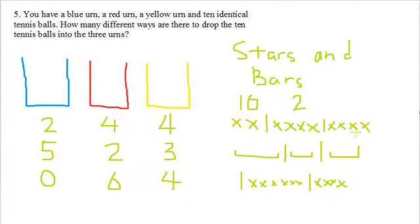So what I hope you see is that every possibility of putting balls in can be drawn as a drawing of ten stars and two bars. And furthermore, any drawing of ten stars and two bars can be converted back into a way of putting balls into the urns. So what this allows us to do is say that to count the solution to this problem, we can just count the solution to the stars and bars problem.